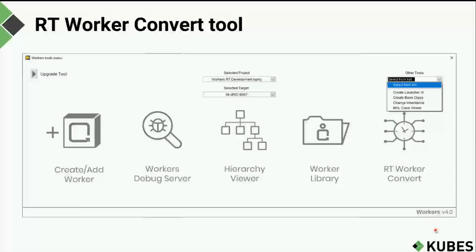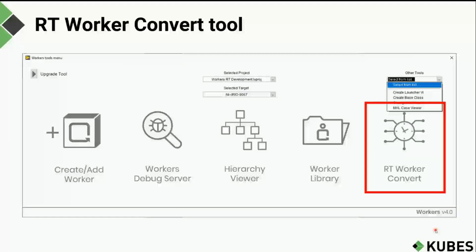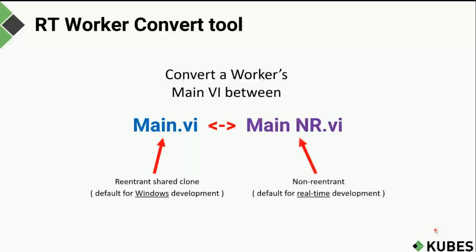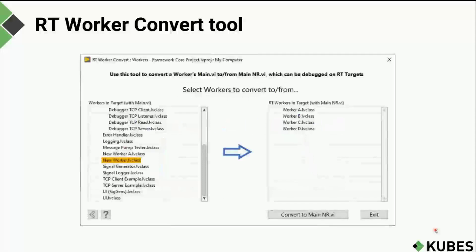The next tool is the RT Worker Convert Tool. In Workers 4, a non-reentrant form of a worker's main VI has been introduced, allowing you to debug your workers' QMH handlers with standard LabVIEW debugging tools when developing on real-time targets. This tool allows you to convert a worker's main VI between its reentrant and non-reentrant forms. By default, all workers are created with a reentrant shared-clone main VI, unless you are creating a new worker on a real-time target, in which case it will be created with a non-reentrant main VI named main_NR.vi.